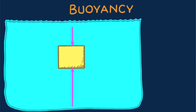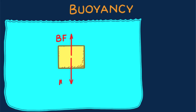When I combine this pair of vertical vectors, the resultant is the net force on the block — which we call the buoyant force on the block, abbreviated BF. For a block at rest, the only other force acting on it is its weight, Mg.